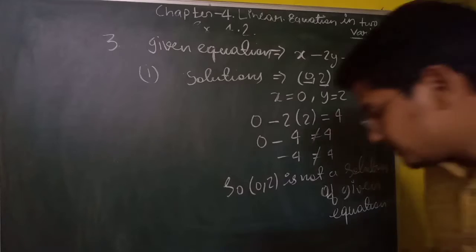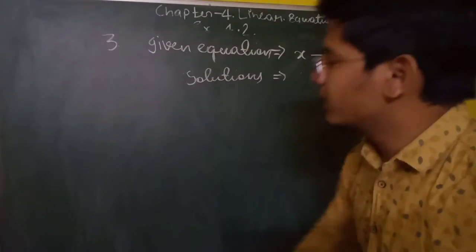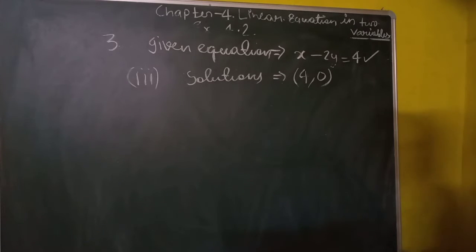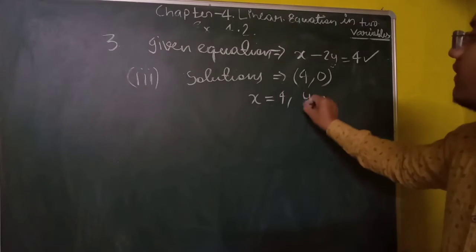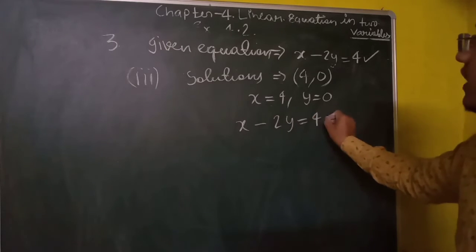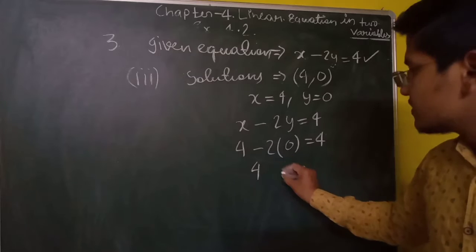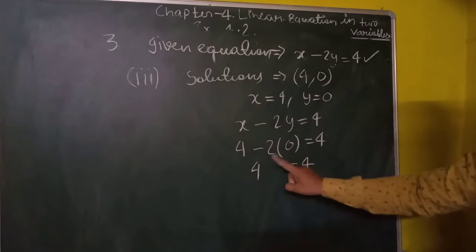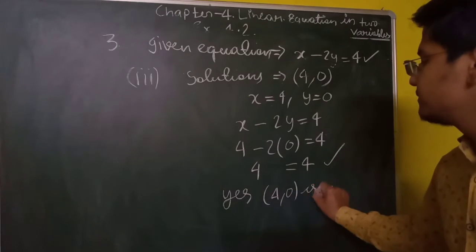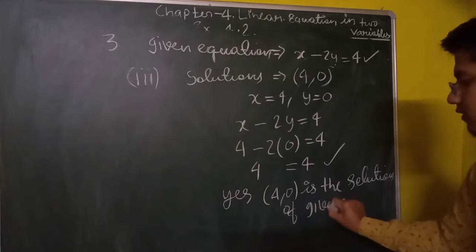Now they give us the point (4, 0). If x equals 4 and y equals 0, we substitute into x minus 2y equals 4: 4 minus 2 into 0 equals 4, that is 4 minus 0 equals 4, so 4 equals 4. Therefore, (4, 0) is a solution of the given equation.